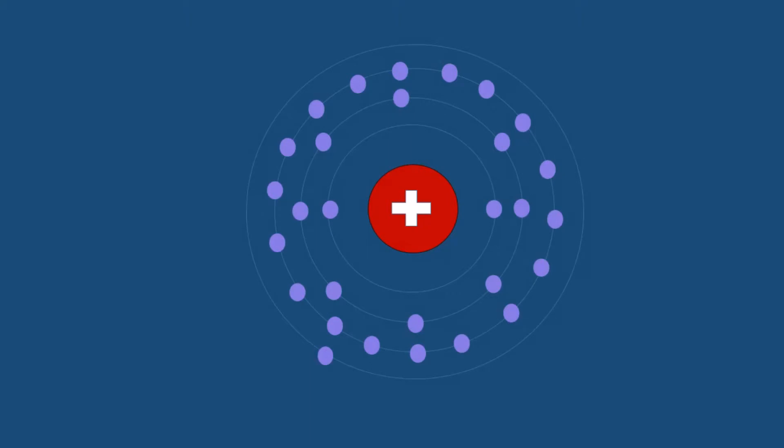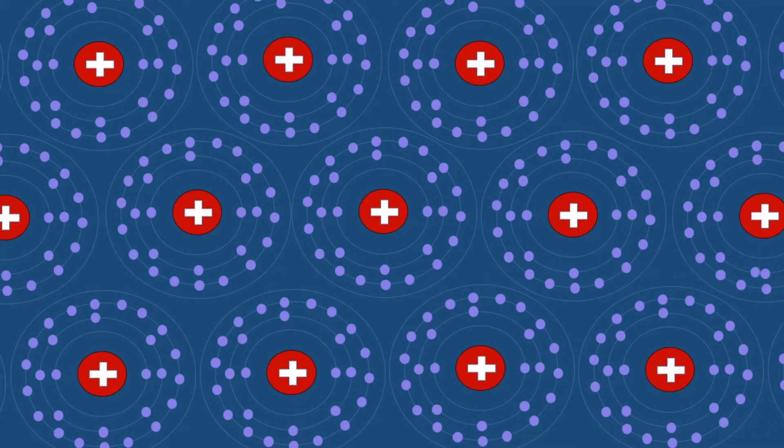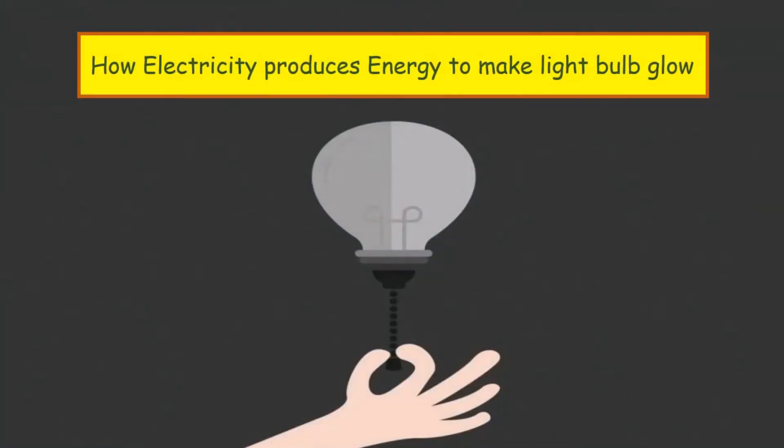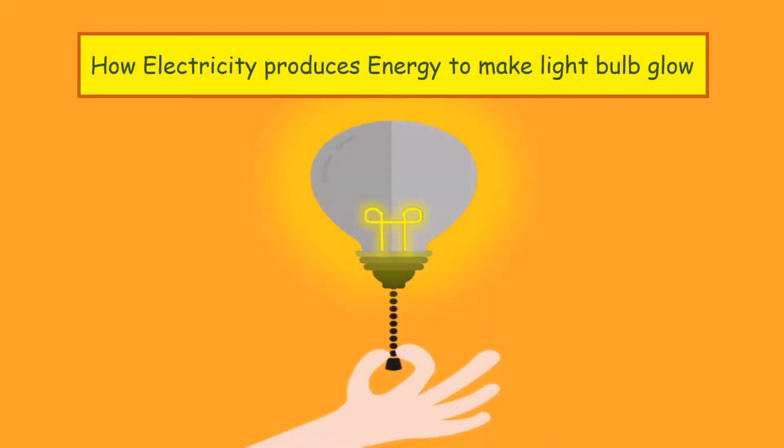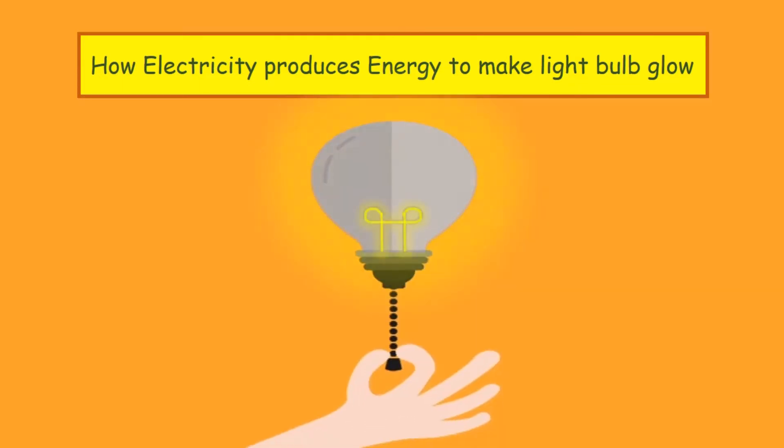In our previous video we discussed how some elements have free electrons, and these free electrons when placed in an electric field experience a force on them and start moving in a particular direction, making electricity flow through the circuit. In this video we will discuss how electricity produces energy to make light bulbs glow.